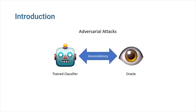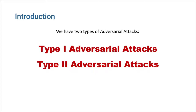Humans, for example, can act as oracles in a lot of circumstances. An attacker might take advantage of these inconsistencies to cause the trained classifier to make more errors. Based on the sort of mistake that it aims to increase, adversarial attacks may be divided into two types.